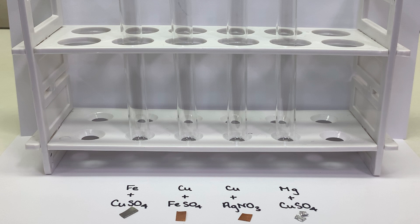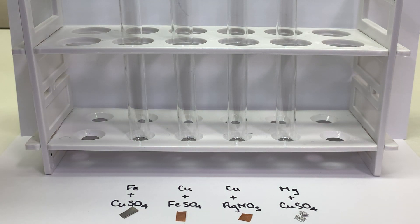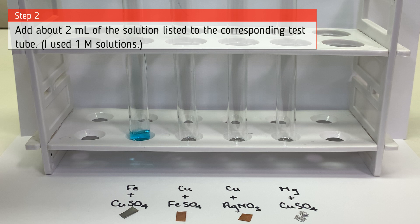Now we are going to attempt four different chemical reactions. The first one is iron metal mixed with a copper sulfate solution. The second is copper metal mixed with an iron 2 sulfate solution. The third is copper metal mixed with a silver 1 nitrate solution. And the fourth is magnesium metal mixed with a copper 2 sulfate solution.